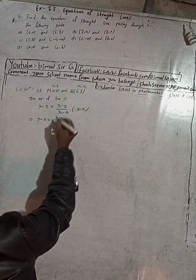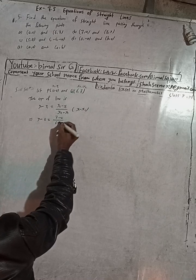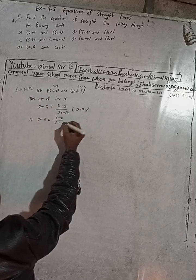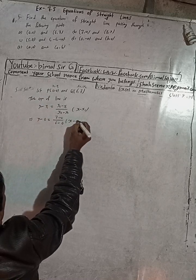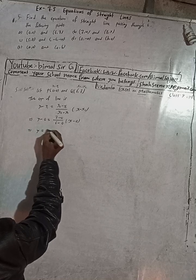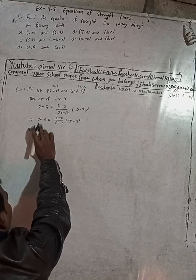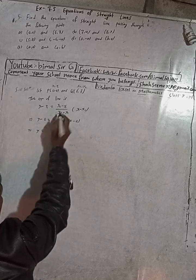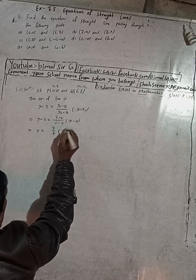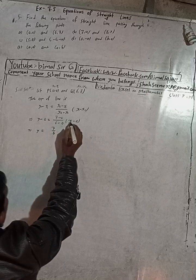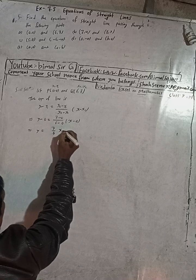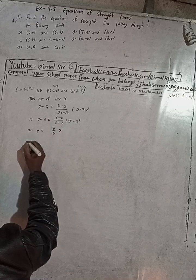Substituting: x1 is 0, x2 is 6, so x minus x1 is x minus 0. Solving this part: y minus 0 equals 7 by 6, and this is multiplied by x minus 0. So y equals 7x over 6.